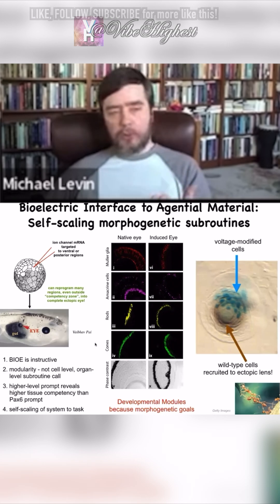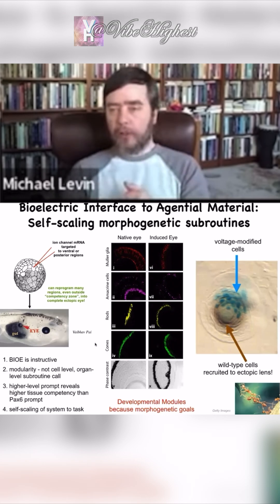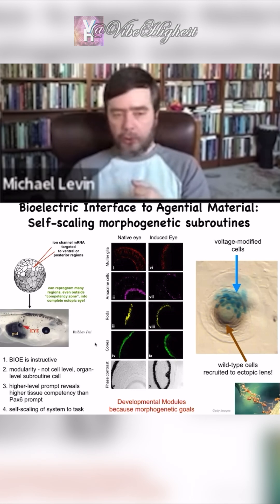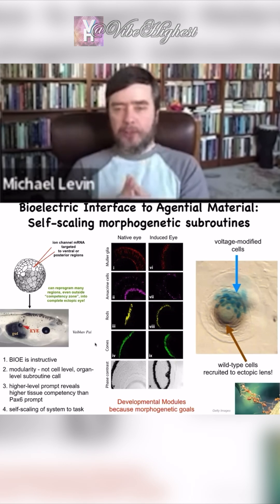Notice what this means: bioelectrics is instructive — instructive at the organ level. We did not have to say which genes to turn on, we didn't have to tell the stem cells what to do. We found a high-level subroutine call that says 'build an eye here,' and the cells are very competent at doing that.